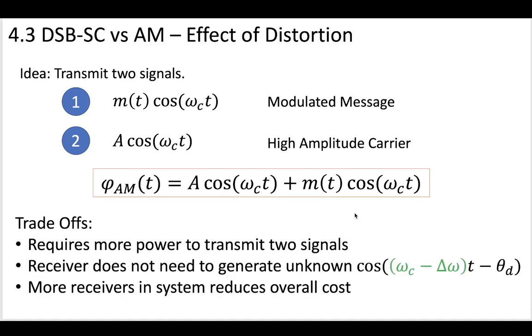Now, what is the trade off here? Why would we do this? So it requires more power to transmit the two signals. But what we're going to find is that by transmitting these two signals, and especially adding in this extra carrier frequency wave with a higher amplitude, we're going to make it so that our receiver does not need to generate some unknown and complex cosine wave that's undergone some frequency shift and some phase shift. So in the case where you have one transmitter but many receivers, adding a little bit of expense here at the transmit side is going to make things less expensive for every single receiver in your system.